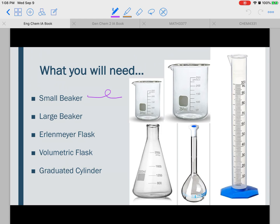So for this experiment, what you're going to need is a small beaker which is right here, a large beaker which is right here, an Erlenmeyer flask or what is also called an e-flask which is right here. We're also going to be using a volumetric flask which is right here, and we're also going to be using a graduated cylinder.